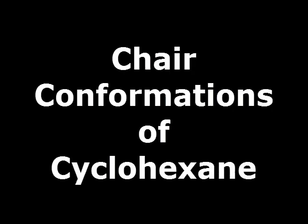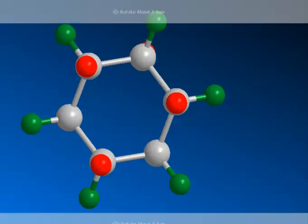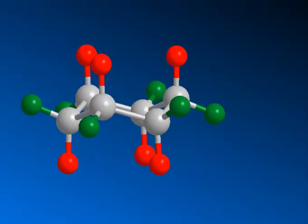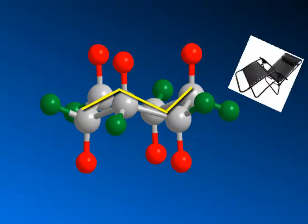Here we're going to talk about the chair conformations of cyclohexane. We normally see cyclohexane written in 2D as a flat molecule, but if you actually turn cyclohexane on its side, you'll see that it actually resembles what we call a chair — like a lawn chair. We see the yellow outline here, we're going to zigzag that, and if we look at a lawn chair, we can outline it the exact same way and see that same zigzag pattern. That's where the name comes from — the fact that it resembles a lawn chair.